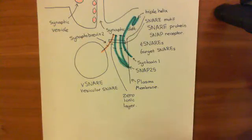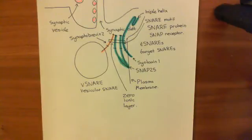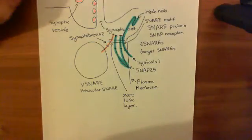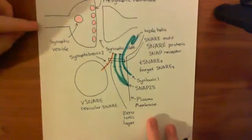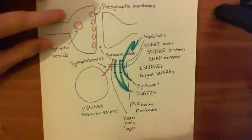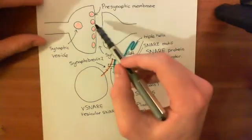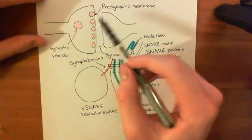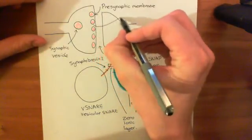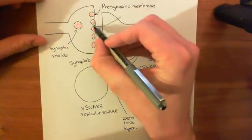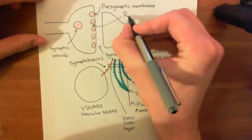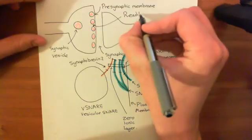Welcome to this next video on synaptic vesicle fusion. So far in the first video, we talked about the fact that we need to dock synaptic vesicles at the presynaptic membrane so that when we get an action potential coming down the axon and arriving at the axon terminal, we can release the neurotransmitter into the synaptic cleft very quickly by releasing these vesicles which are docked at the presynaptic membrane. This store of vesicles docked at the presynaptic membrane is known as the readily releasable vesicle pool.